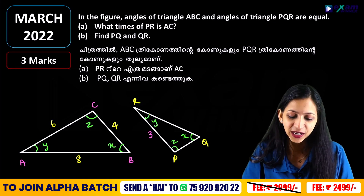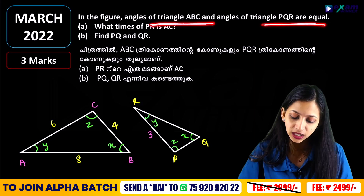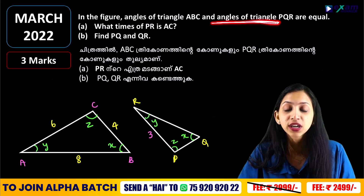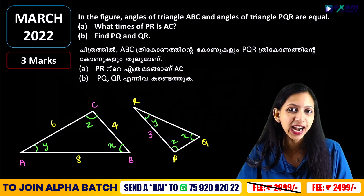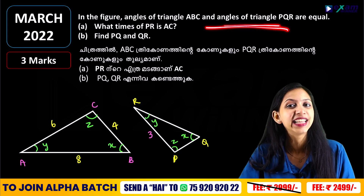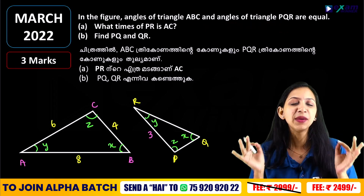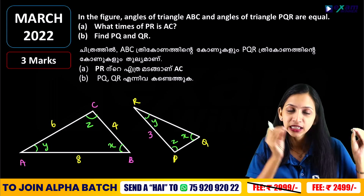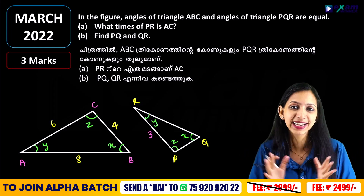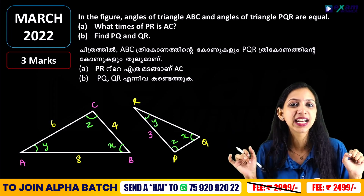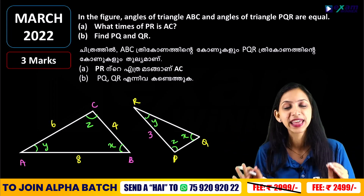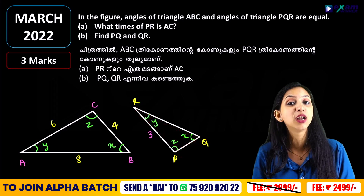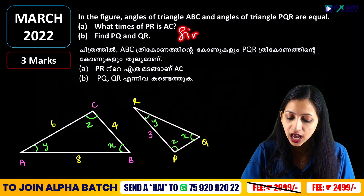We have a few examples. Triangle ABC and triangle PQR are equal. That's why we have two triangles — triangle ABC and triangle PQR. The angles of the two triangles are equal. Since there are two triangles related to each other, and three angles between the two triangles are equal, these are similar triangles.